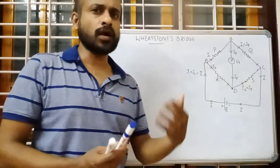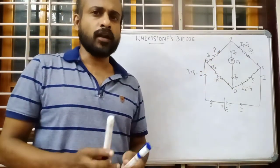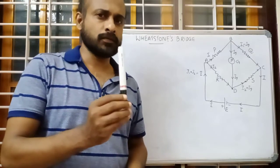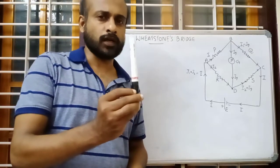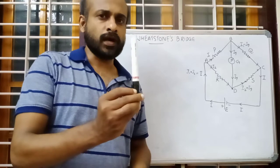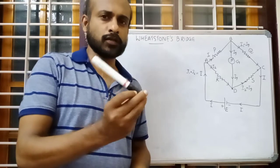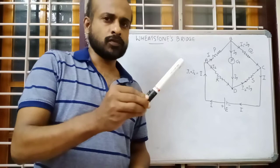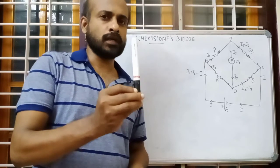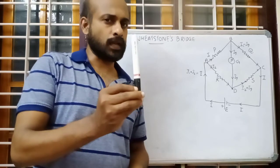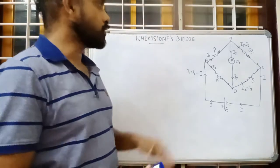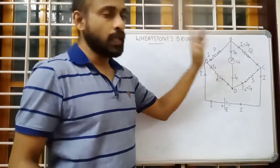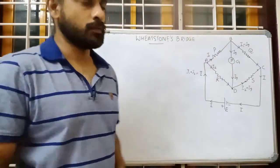When the balancing condition is attained, no current will flow through the galvanometer. If the galvanometer is not carrying any current, it will not deflect — it will stay vertical with no deflection. If current flows in one direction, the galvanometer deflects to one side; opposite direction deflects the other side. So when no current flows, it remains vertical. We need to find the condition for this null deflection — that is the balancing condition.